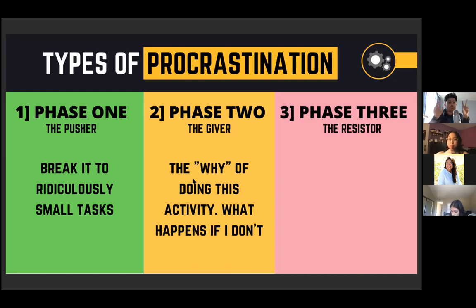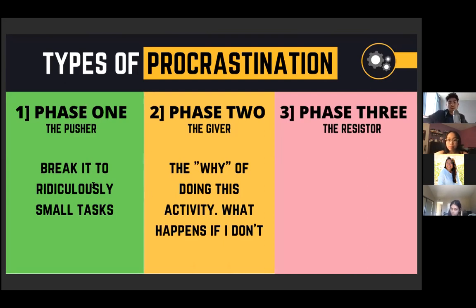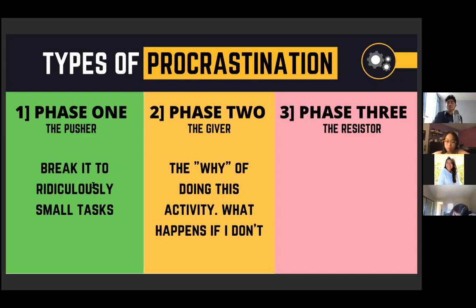Phase two is called the Giver. To solve this, ask yourself two things: why am I doing this activity, and what happens if I don't do it? If you have an exam tomorrow worth 50% of your mark and breaking it into small pieces still isn't enough, move to phase two. Ask: 'If I don't study, I'm going to miss out on 50%.' Think of yourself as two individuals — who you could become versus who you are right now.